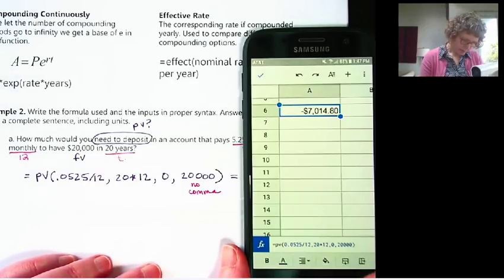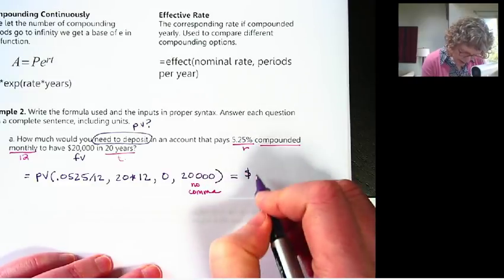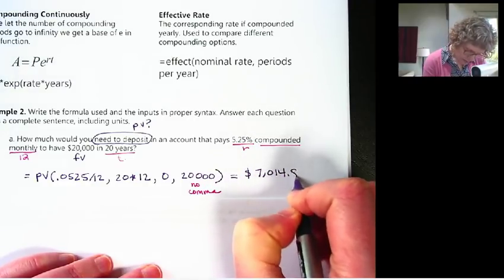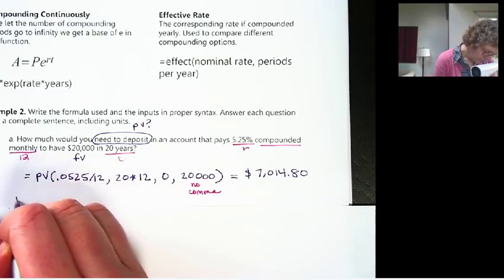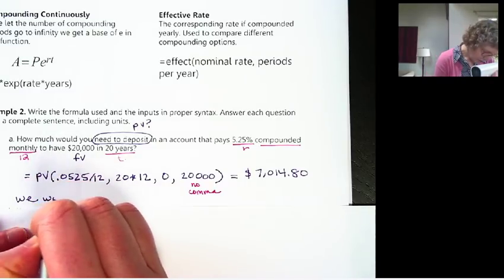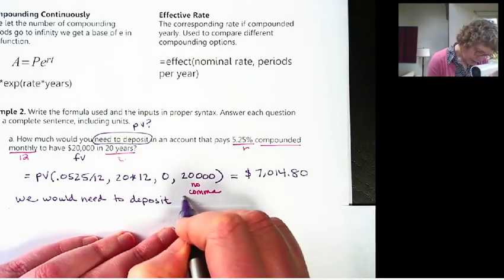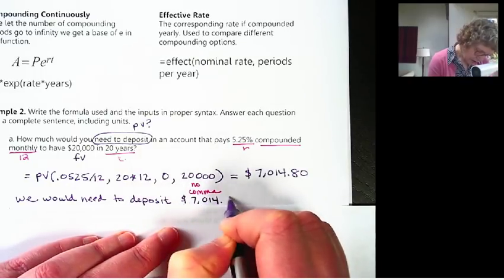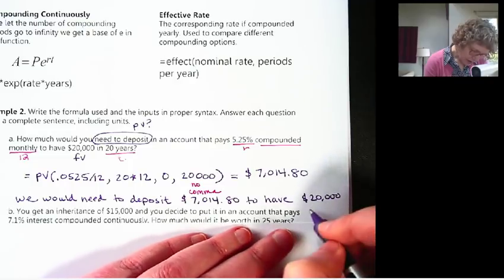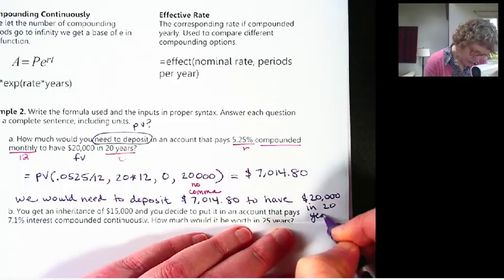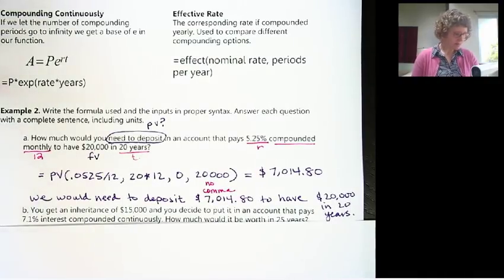Okay, that compounding really works for you, doesn't it? But it takes time. So let's write our answer down. Again, ignore the negative sign. And then we'll write a sentence. We would need to deposit $7,014.80 to have 20,000 in 20 years. And you don't have to write every single piece of information in the sentence. It's just really to make sure that you're understanding the context.